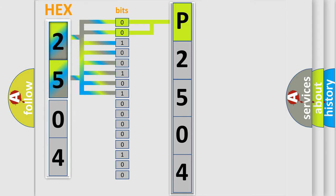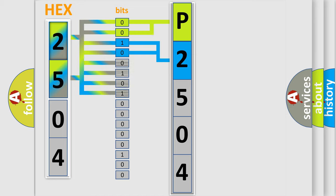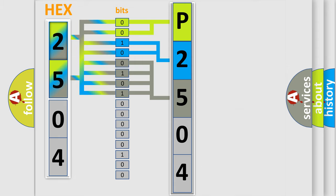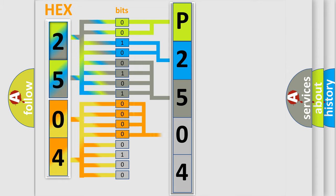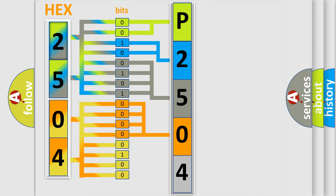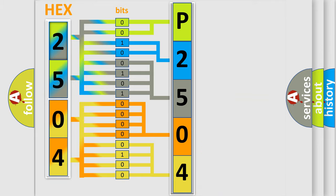The next two bits determine the second character. The last bits of the first byte define the third character of the code. The second byte is composed of a combination of eight bits. The first four bits determine the fourth character of the code, and the combination of the last four bits defines the fifth character. A single byte conceals 256 possible combinations. We now know how the diagnostic tool translates the received information into a more comprehensible format.